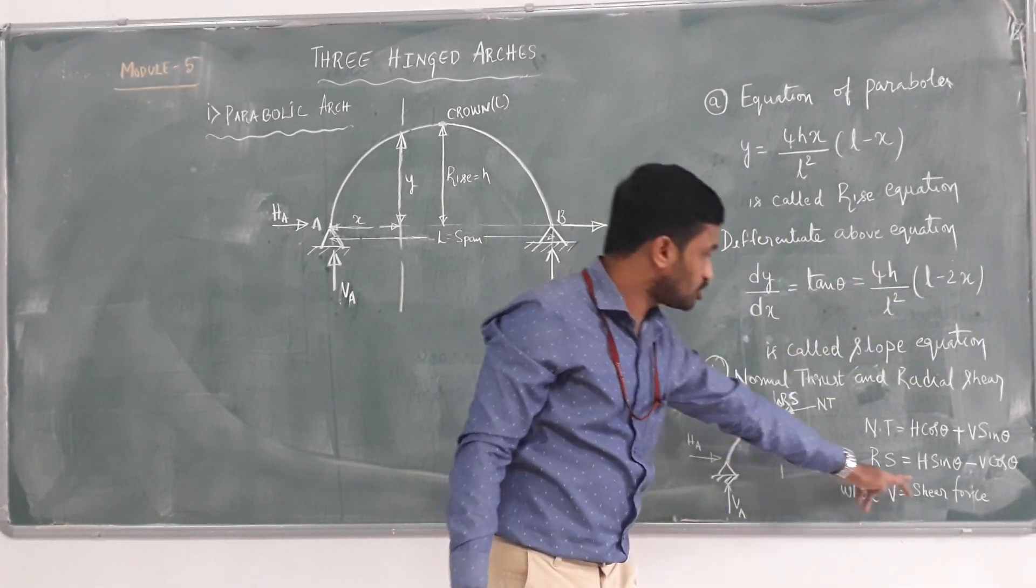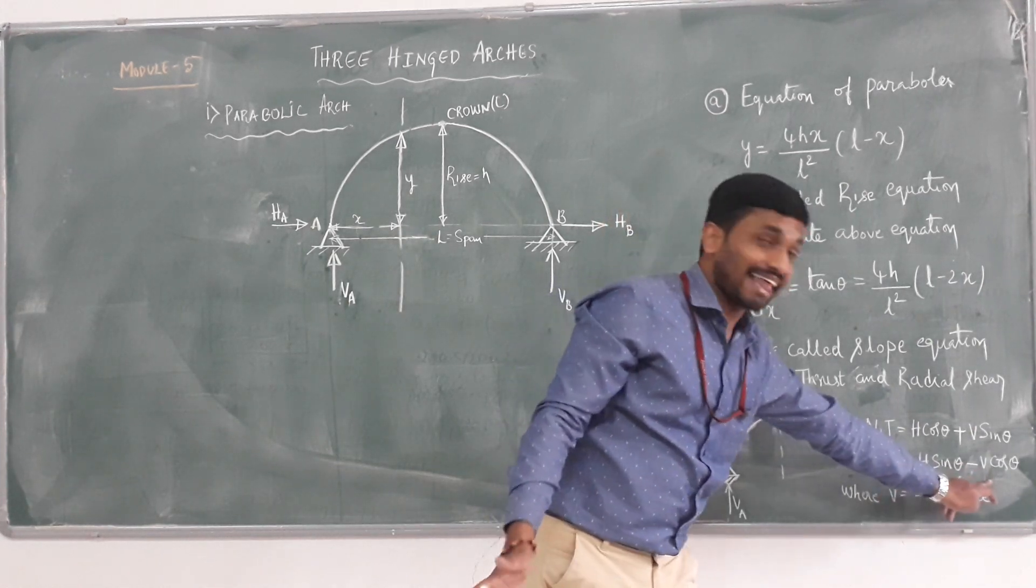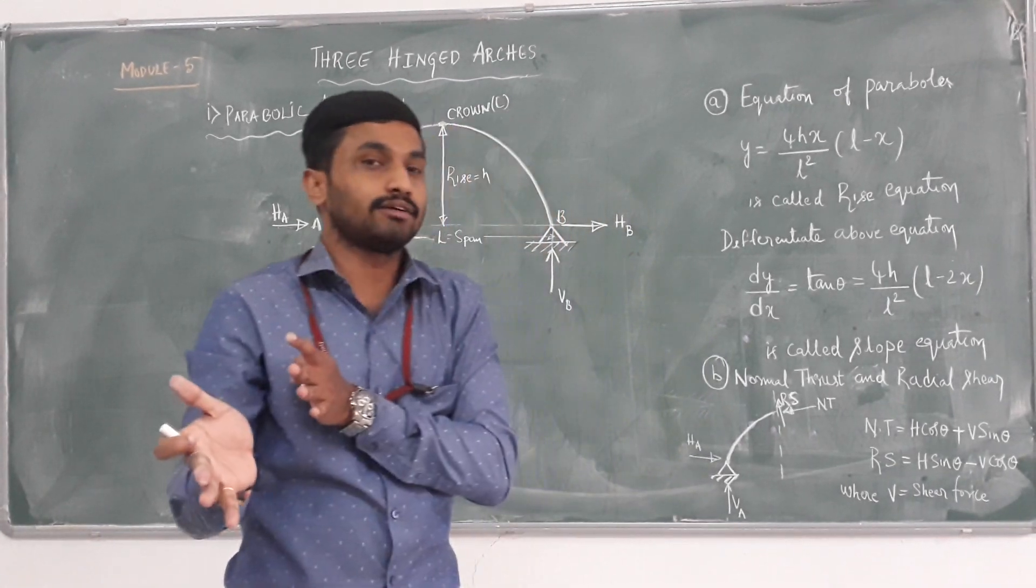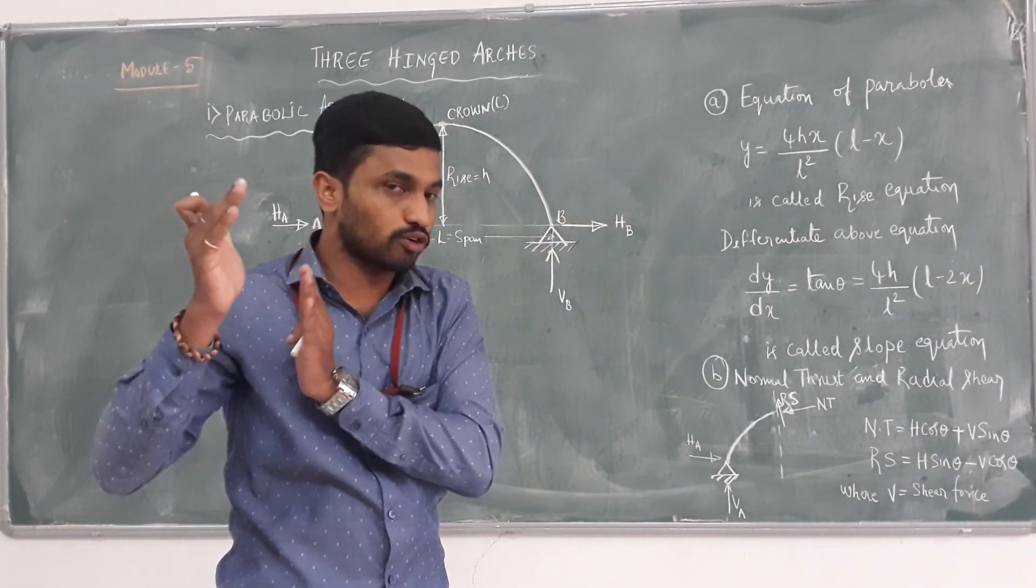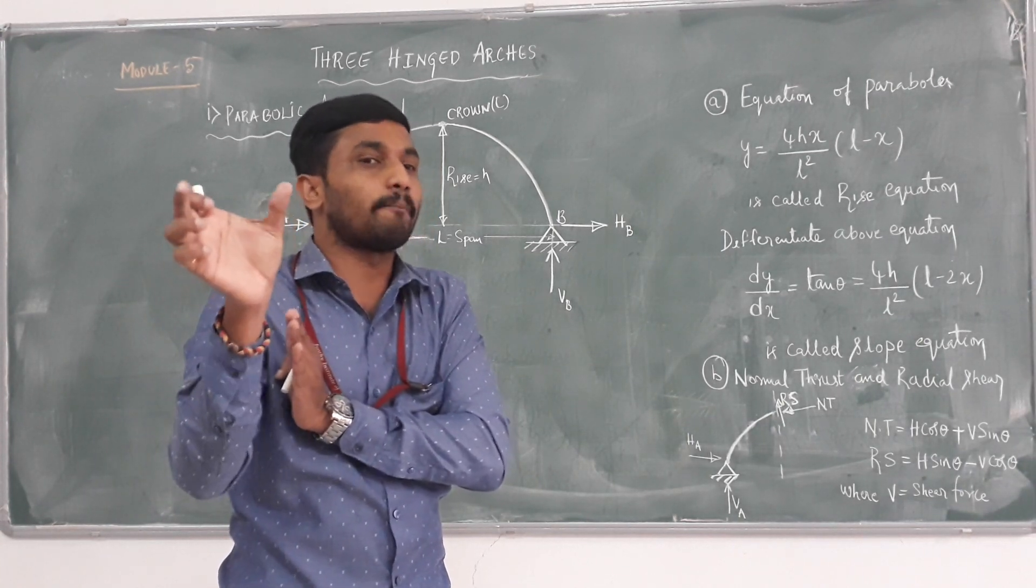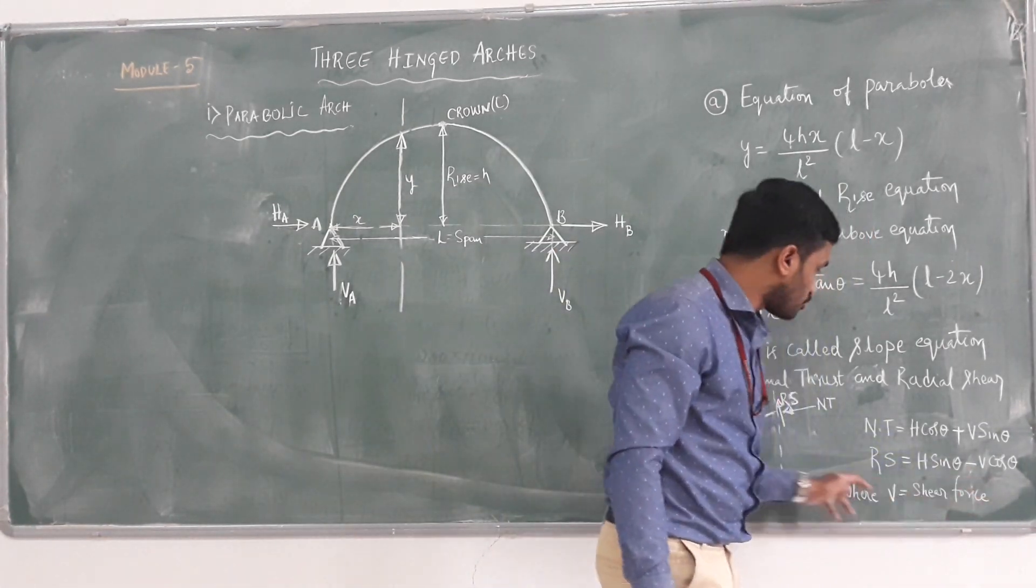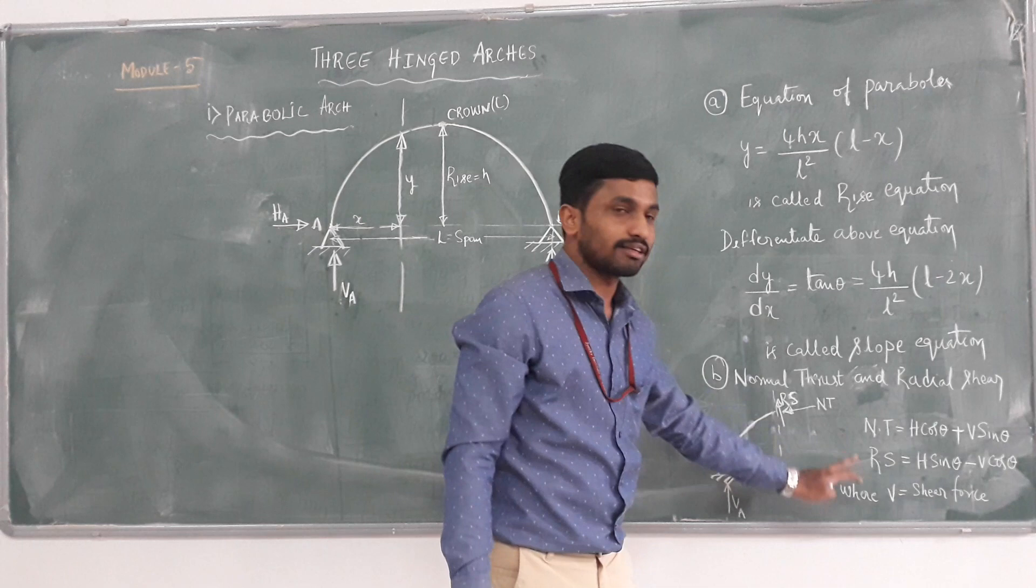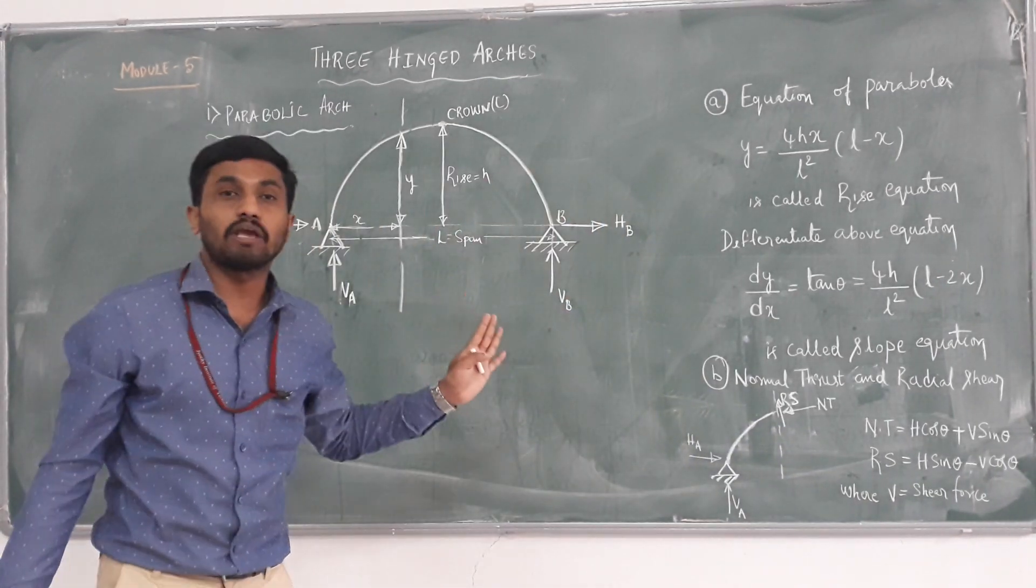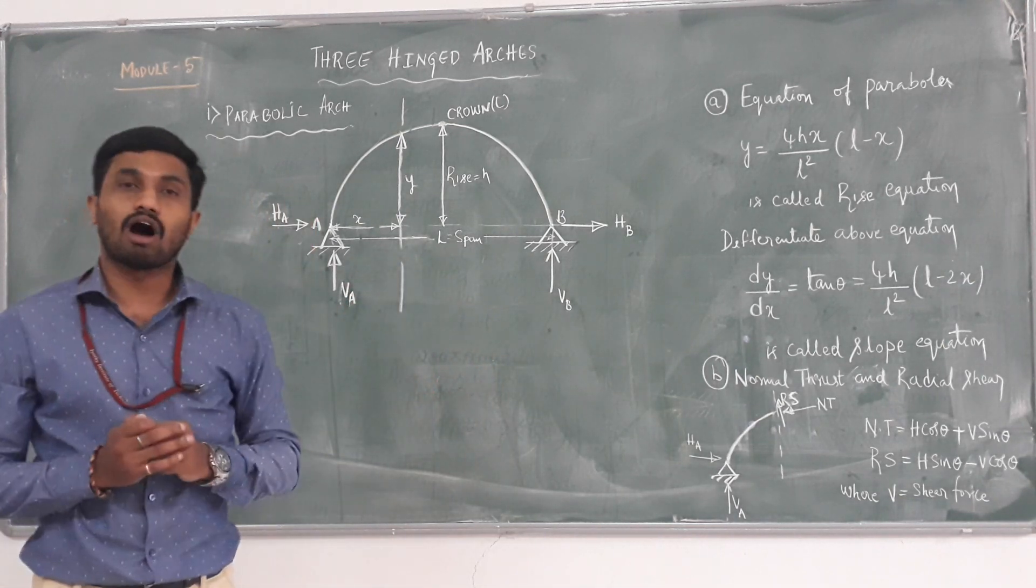Finally, substitute in this equation. H we already know from external support reaction. We can calculate V, the shear force at required specific point. You have to observe the problem carefully to determine at what distance you have to compute shear force. That is the value of V. Just substitute the direct value in equation. You are getting normal thrust and radial shear. This is the basics you have to keep in mind when solving three-hinged parabolic arch problems.